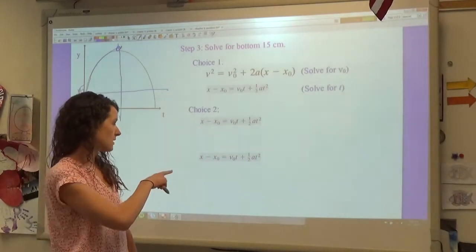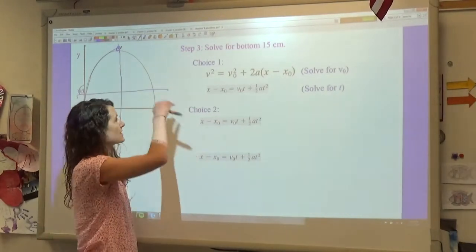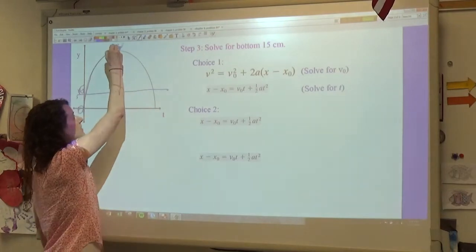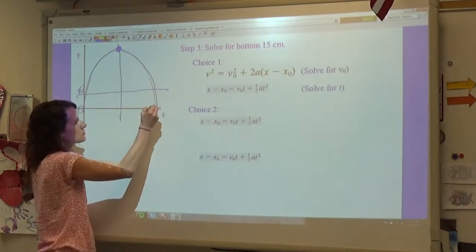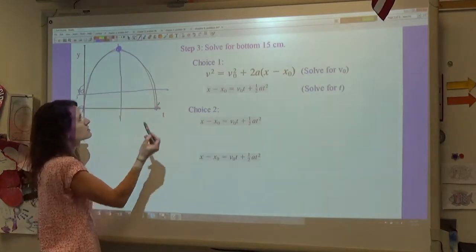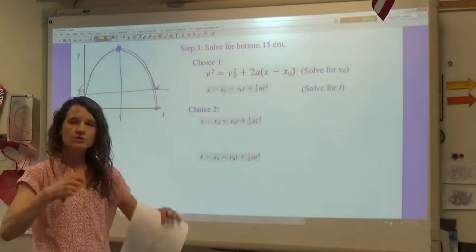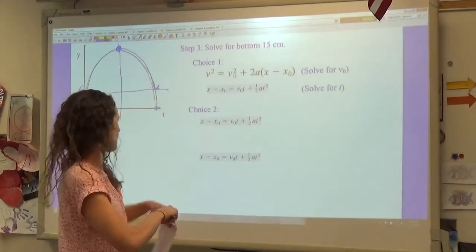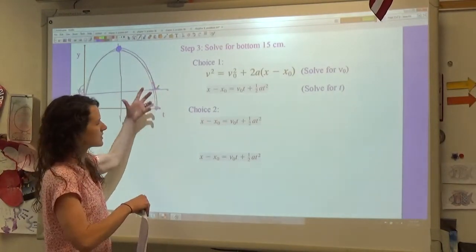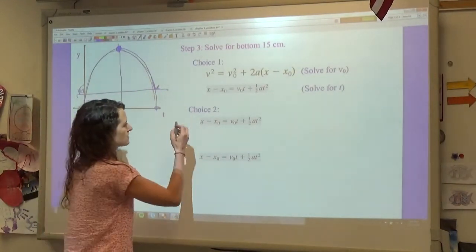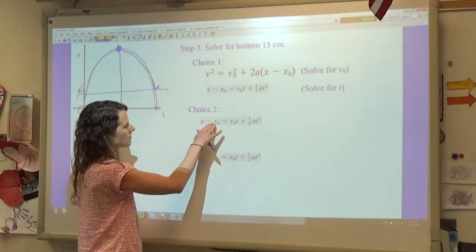But I think a more intuitive way to approach it is to solve for the entire time that it would take to go from the top to the bottom, and then solve for the time that it would take to go from the top to 15 centimeters. And in that way, you can just subtract those two times and find out this little bit of time that we are curious about.